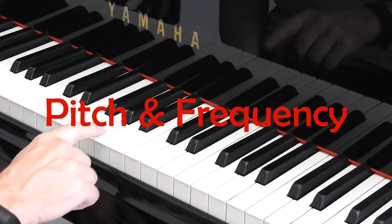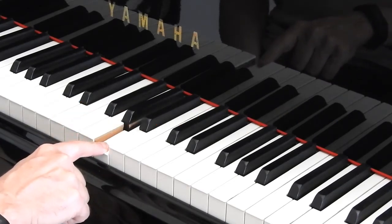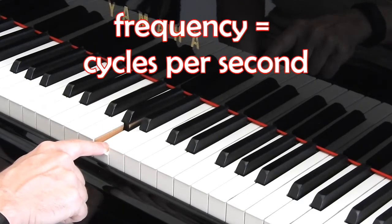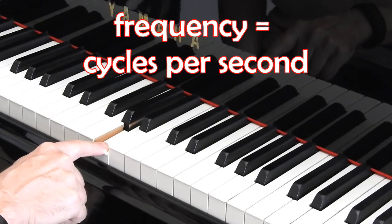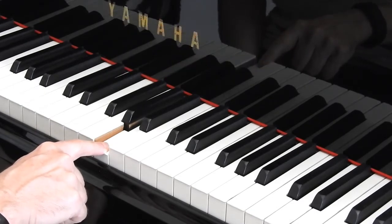So if I press a note on this piano, this is an A, and if you looked at the frequency, how many cycles per second, how many vibrations in a second this note makes, it's 440.